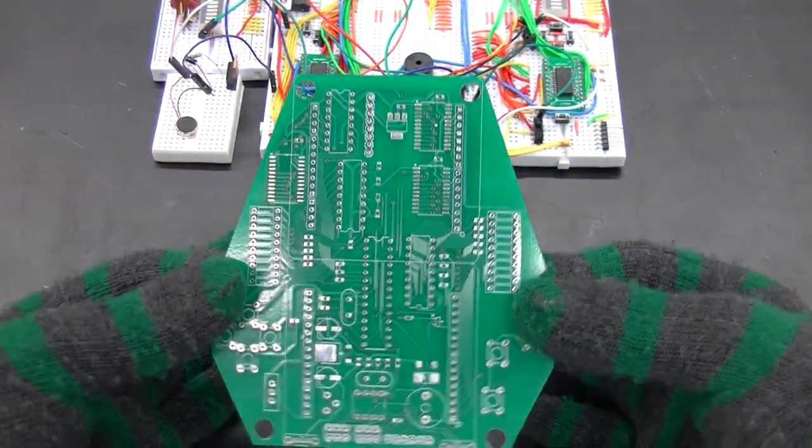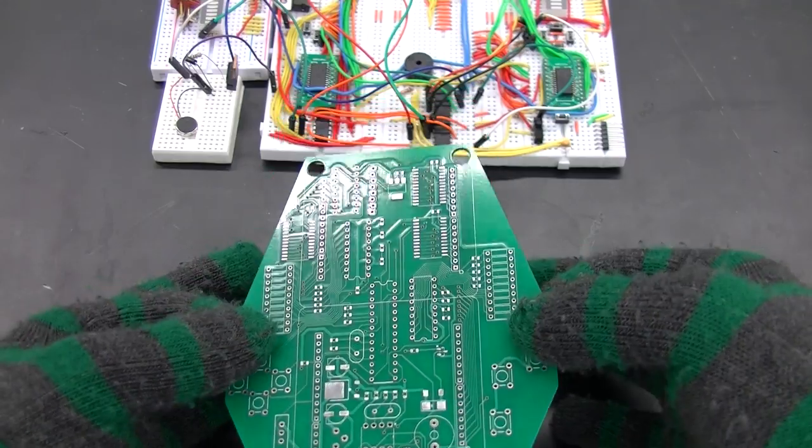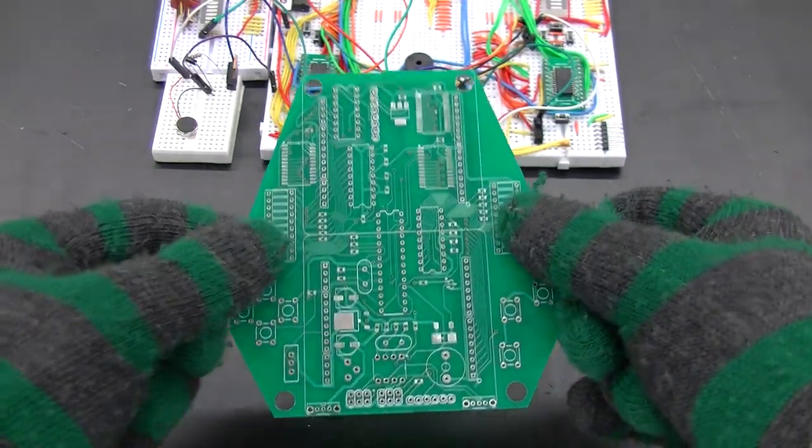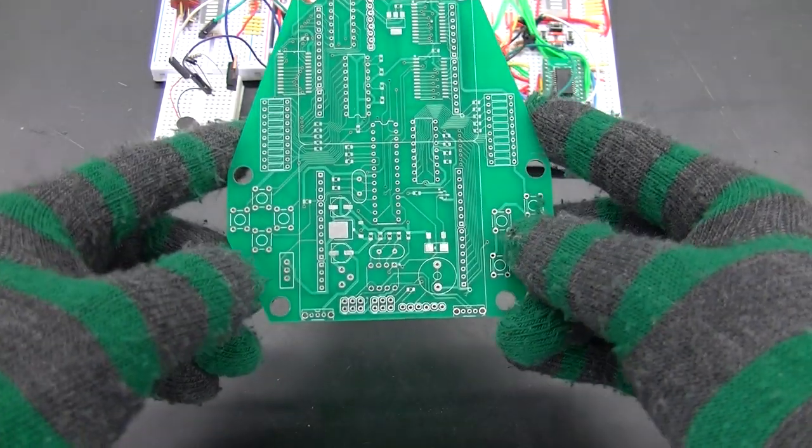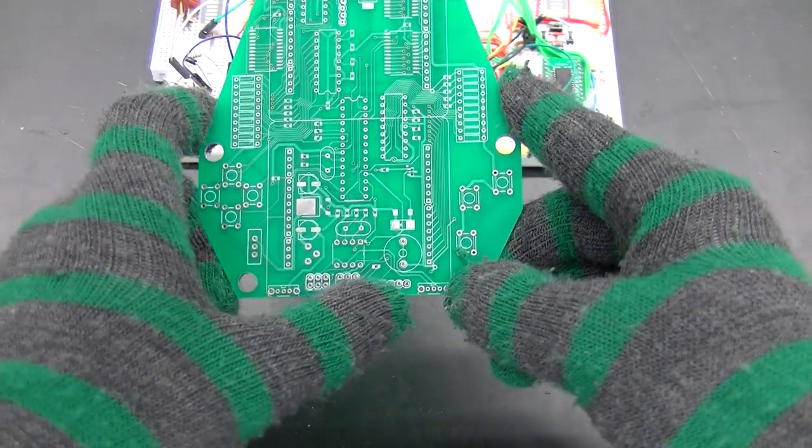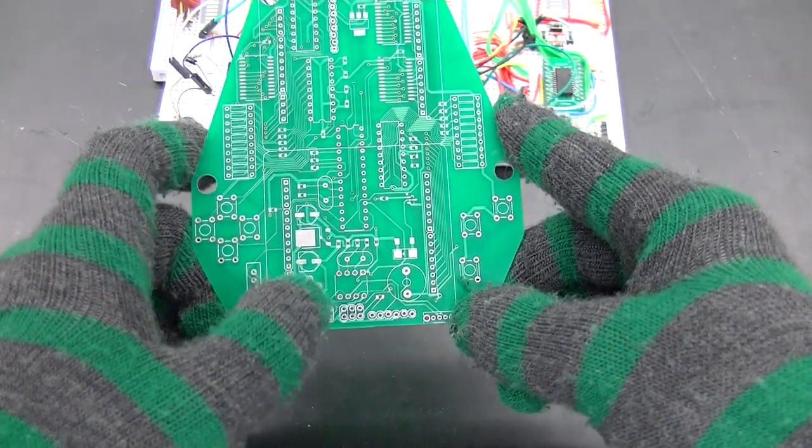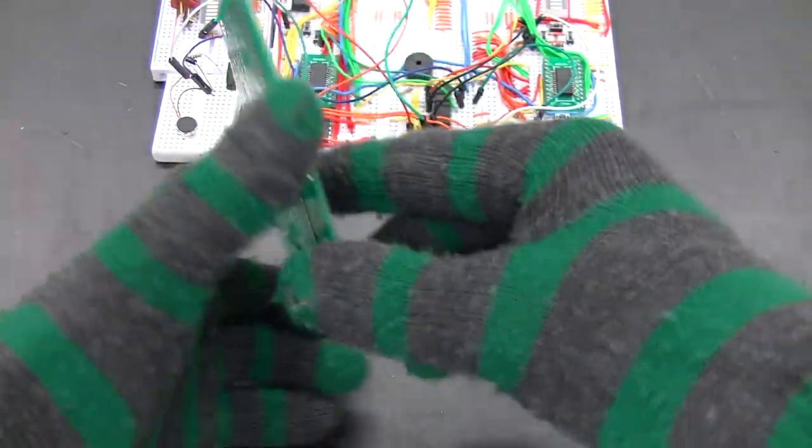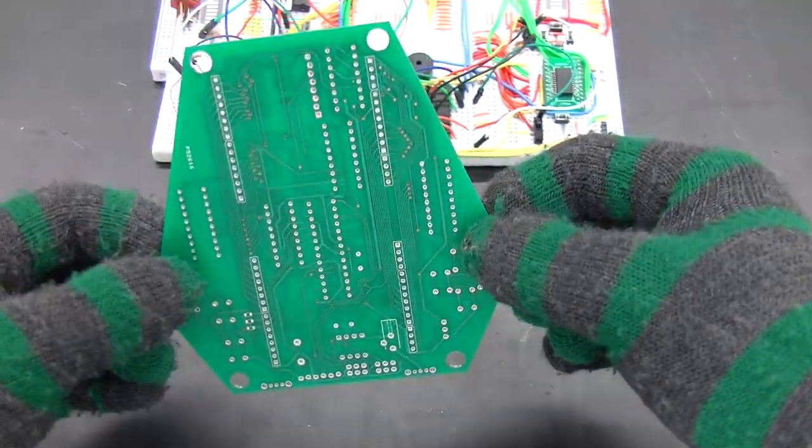So here's one of them showing you the footprints for the ICs and the LED bar graphs, some buttons, a couple switches, programming headers, and a piezo speaker. Here's the back of it.